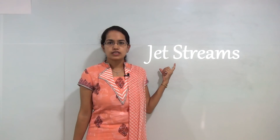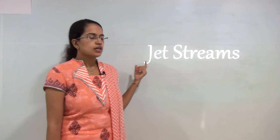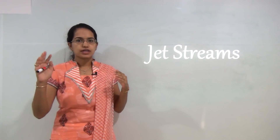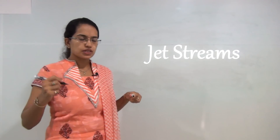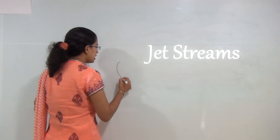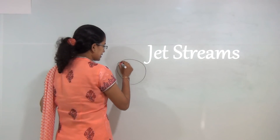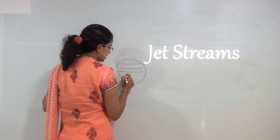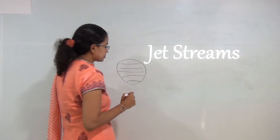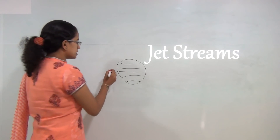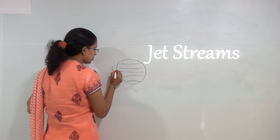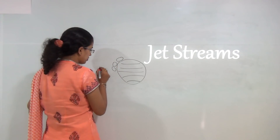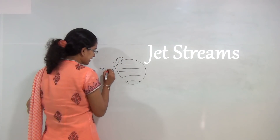In this session we will be understanding what jet streams are. To understand jet streams we need a fundamental idea about the concept of circulation and wind patterns discussed in the previous lesson, where we talked about three cells that are formed: the Hadley cell, the Ferrel cell, and finally the polar cell.